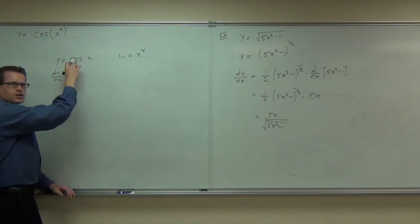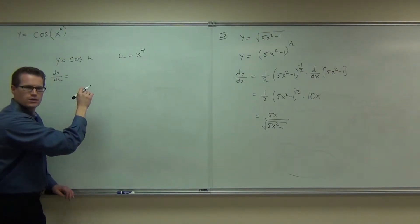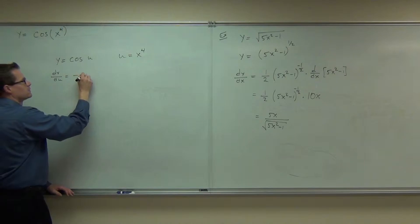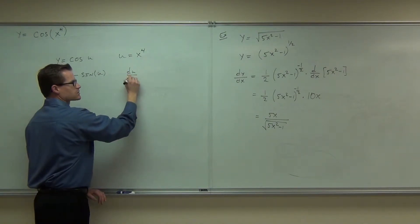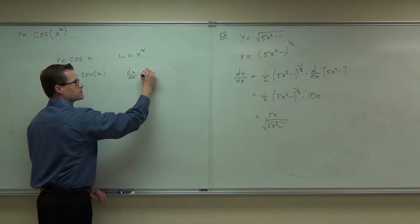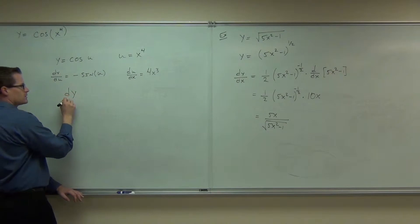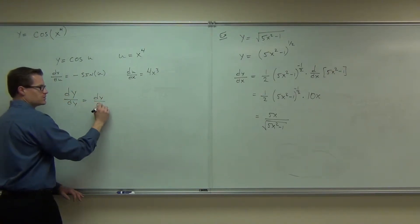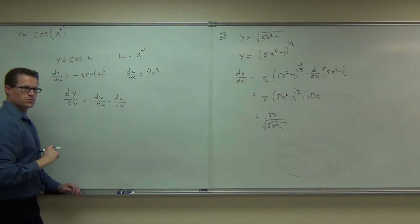What's dy/du here, ladies and gentlemen? We just talked about it. Negative sign what? U. Negative sign u. And du/dx. What's du/dx? 4x³. And we knew that dy/dx is dy/du times du/dx. True. True story.